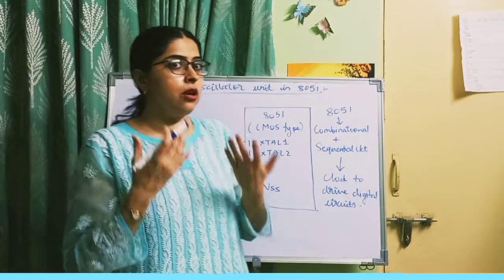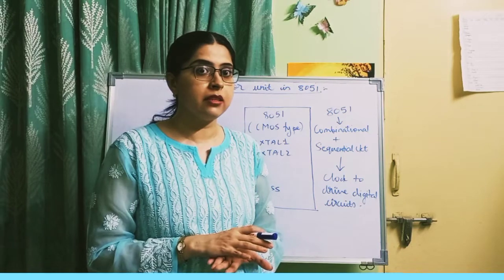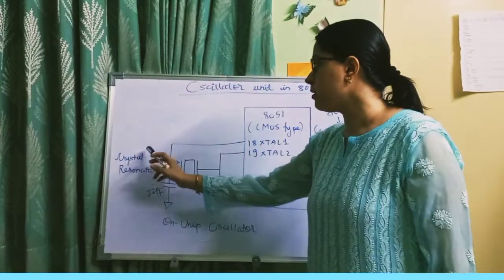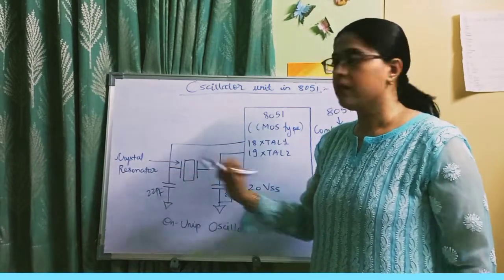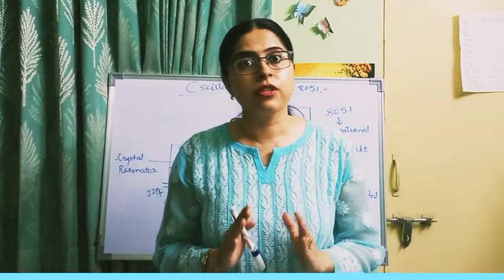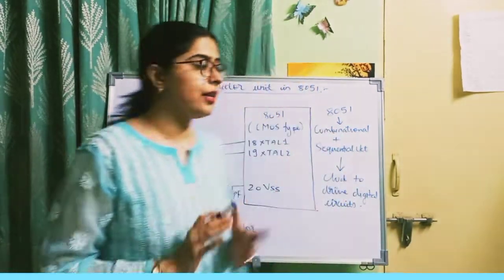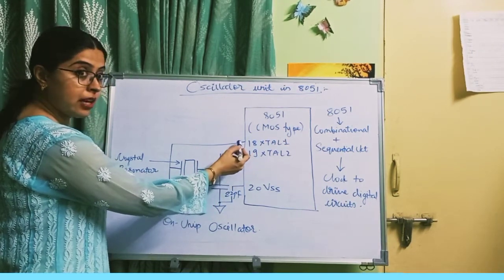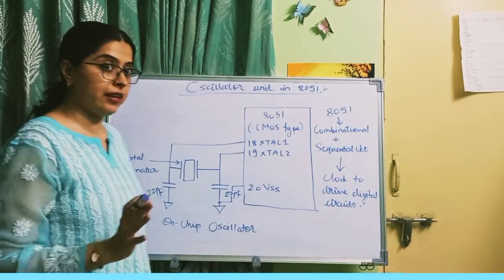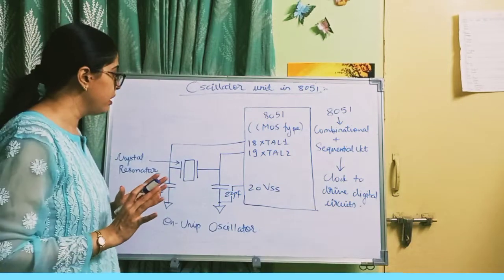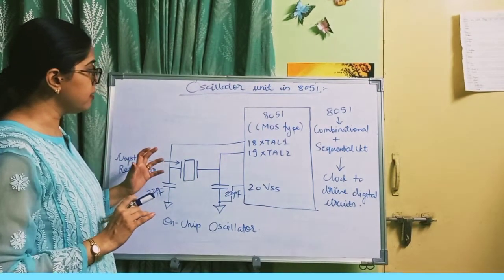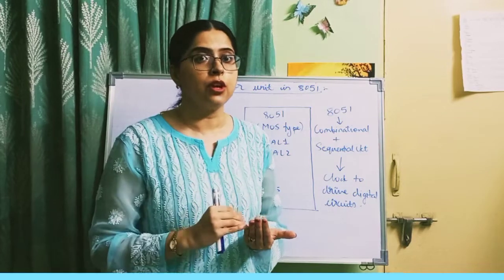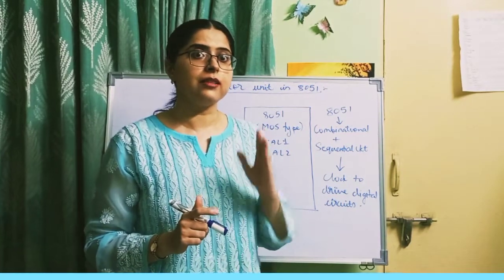The internal oscillator circuit inside 8051 is not enough. We require some external component, and that external component is a ceramic crystal resonator. This ceramic crystal resonator is connected across XTAL1 and XTAL2 pins along with two capacitors of 22 picofarad. After connecting this, the clock signal is generated by the oscillator unit. So only one external component is required — the ceramic crystal resonator.